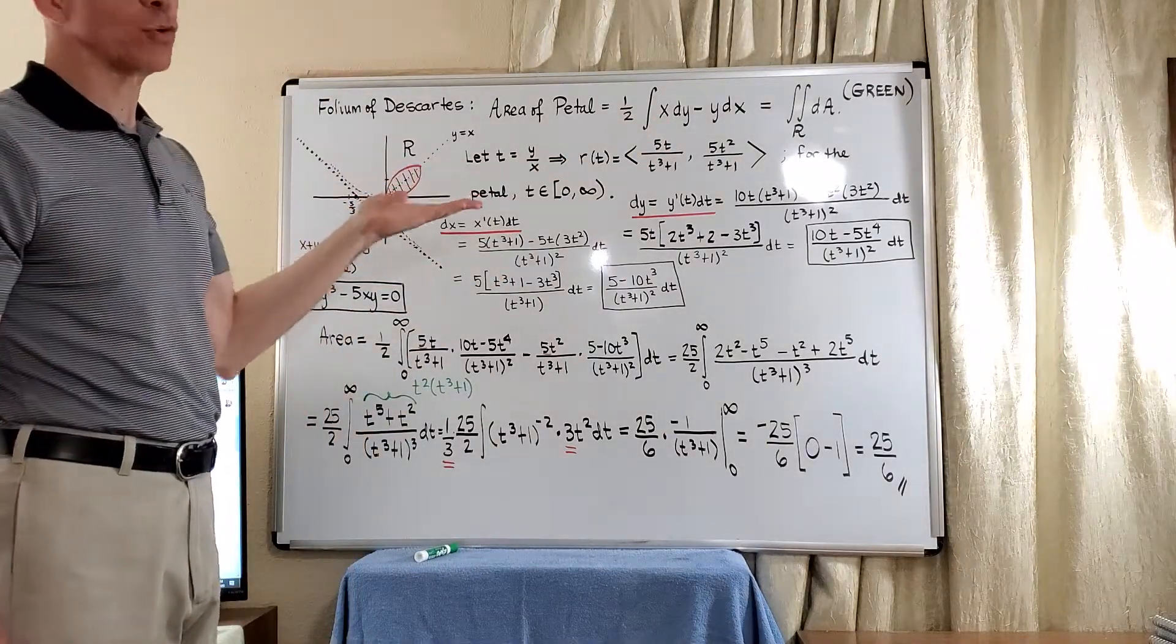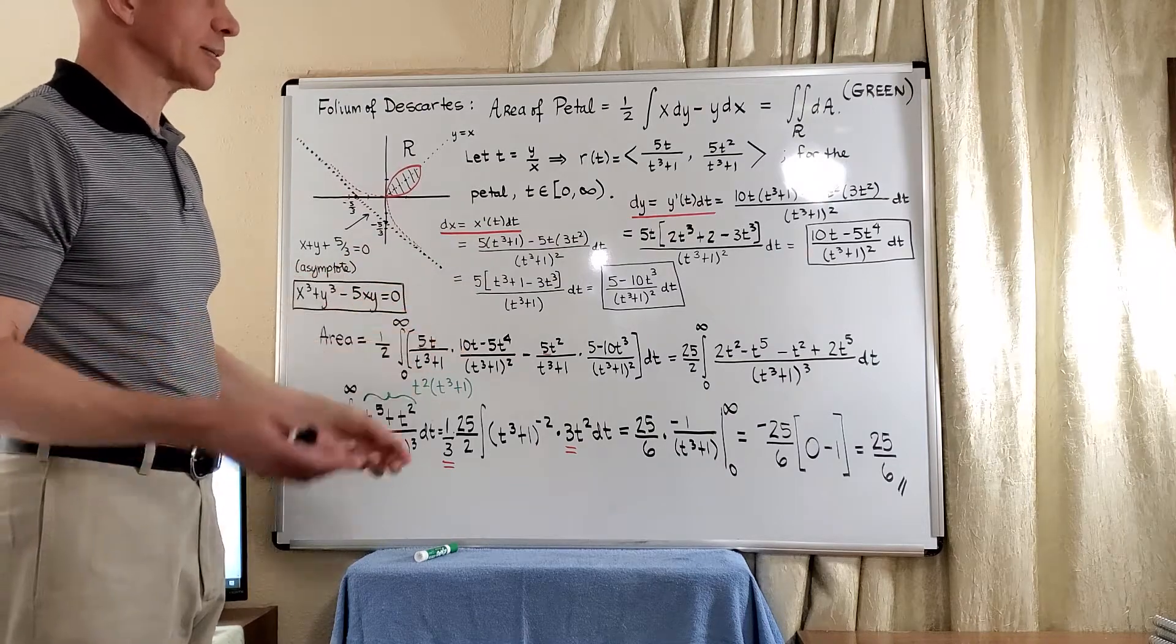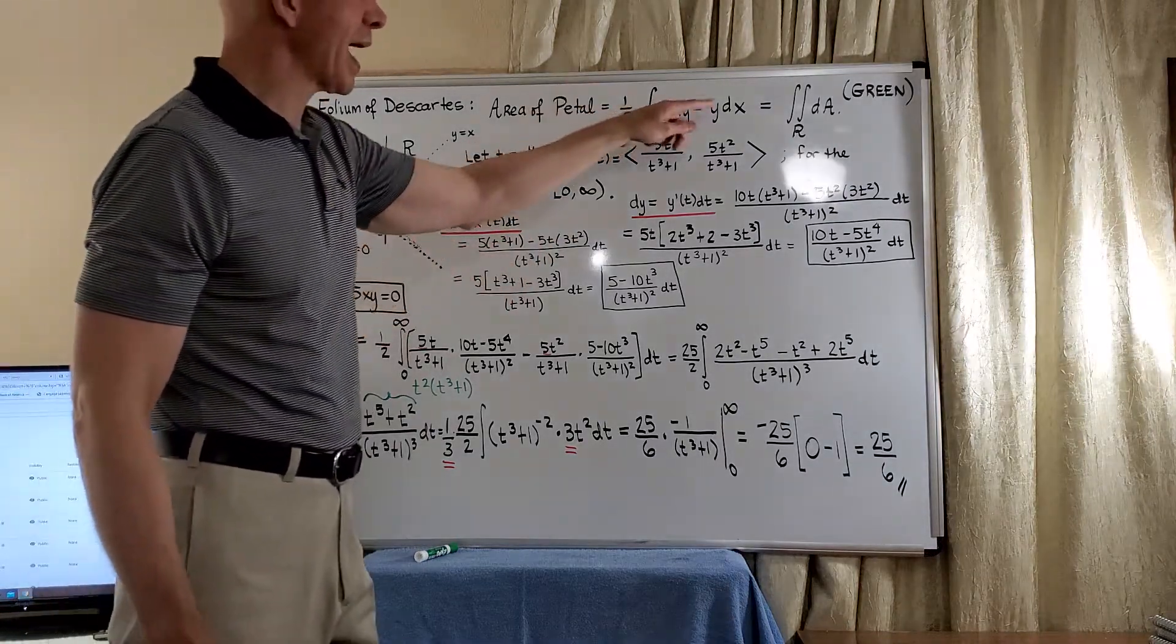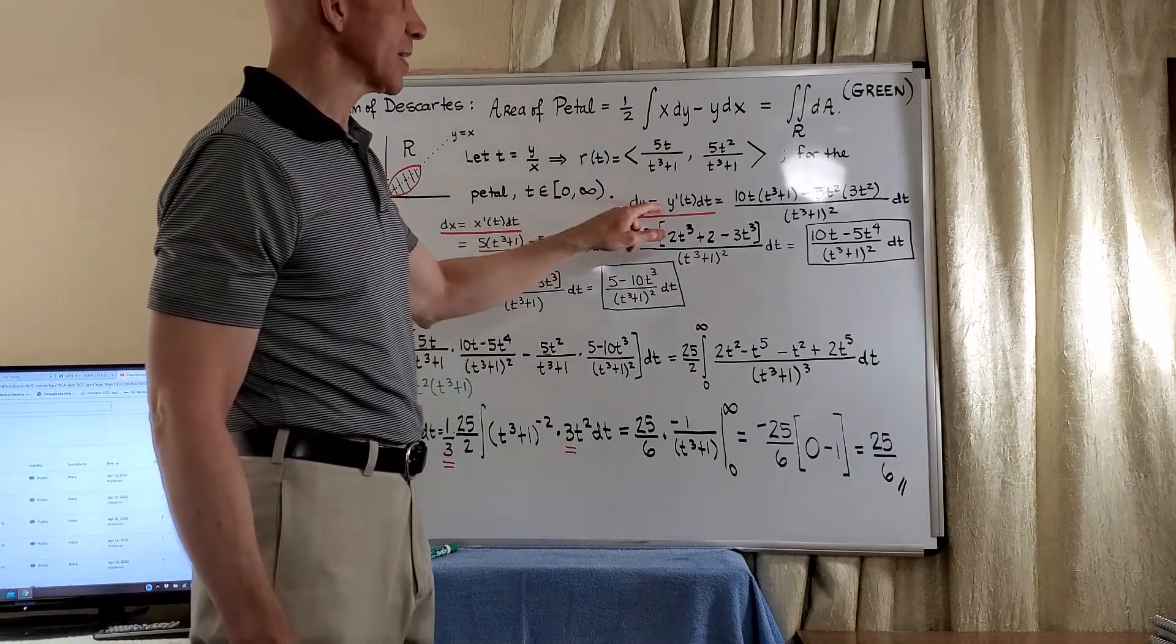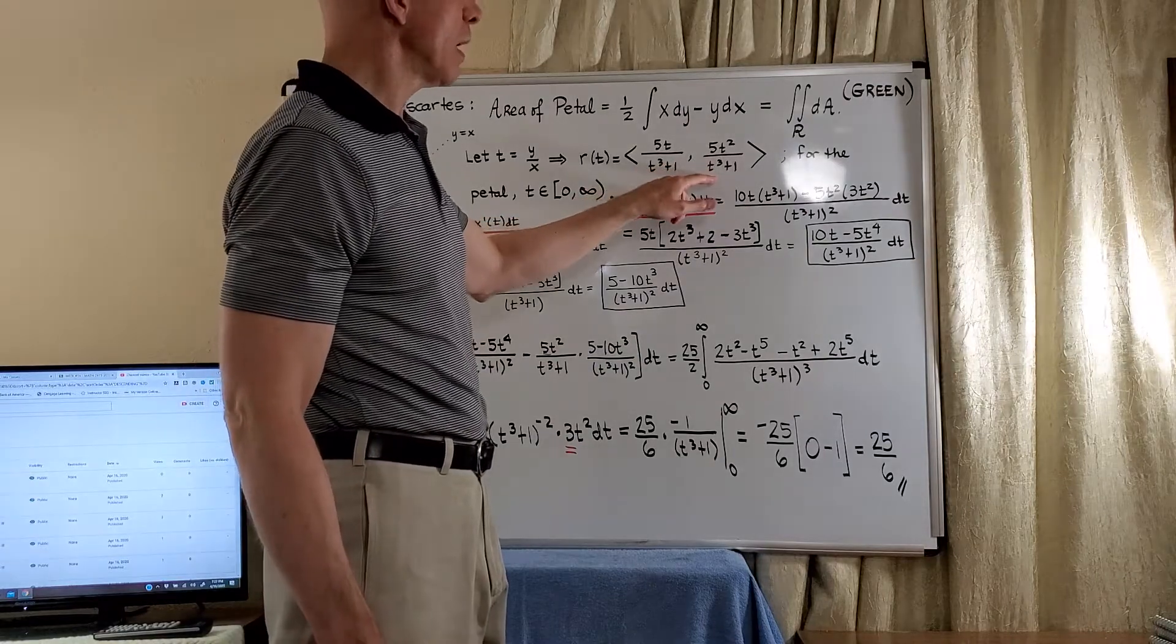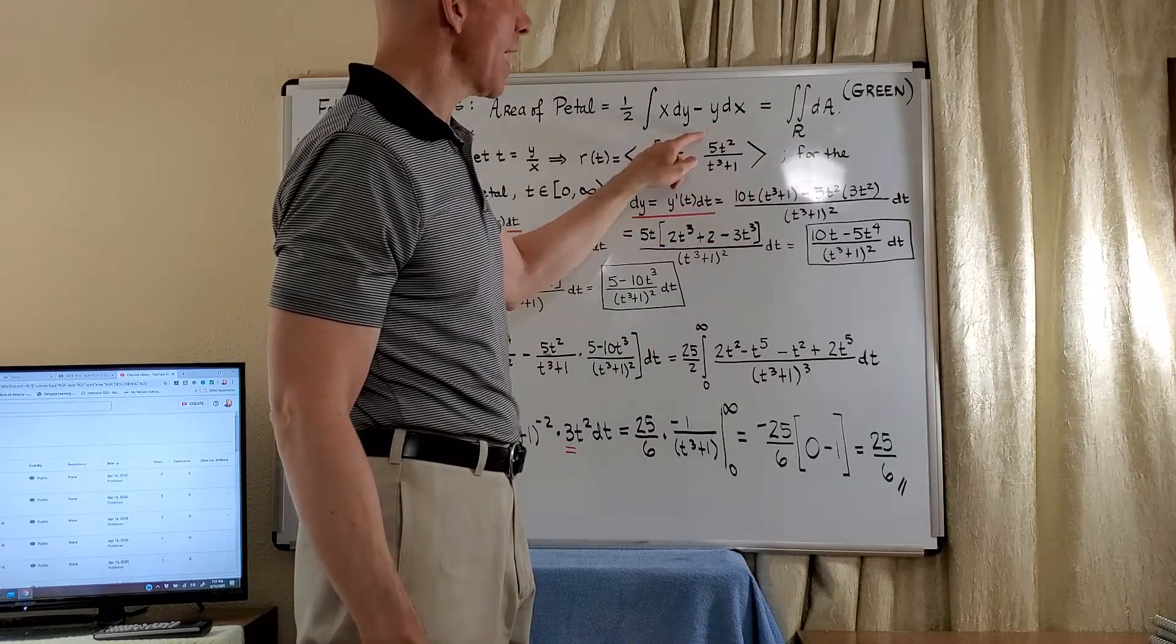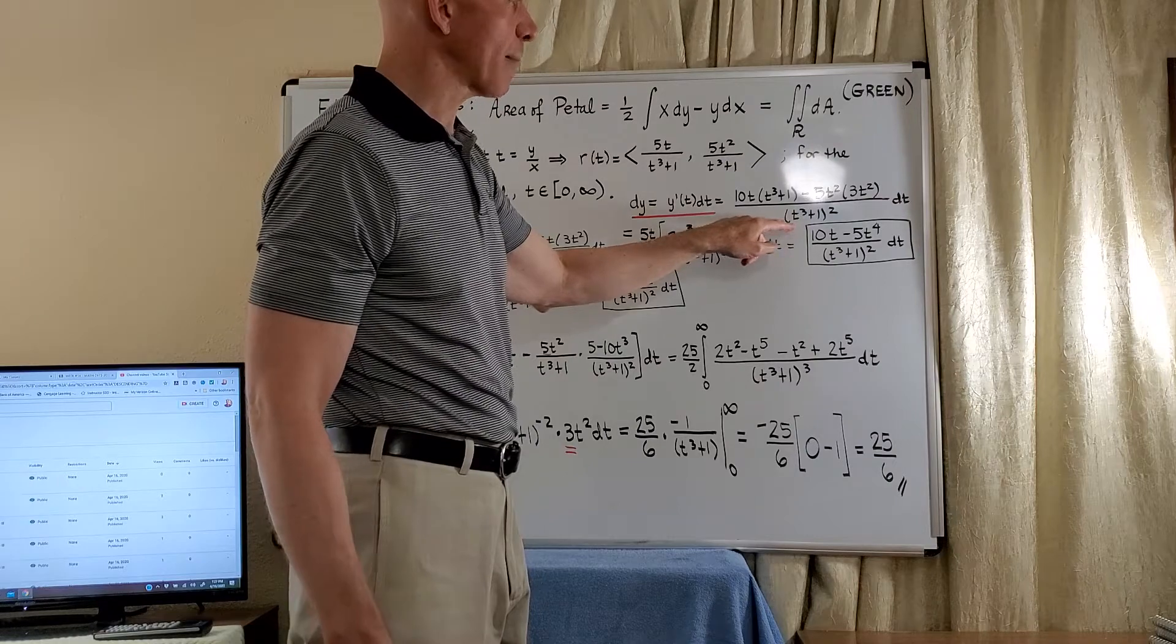That means we just have to apply the standard definition. When we do this line integral, we're going to need dy and dx. So let's compute those first. dy by definition is y prime dt. So we take the derivative of y: 10t times t cubed plus 1 minus 5t squared times 3t squared, and then square the denominator dt.